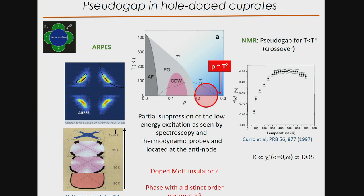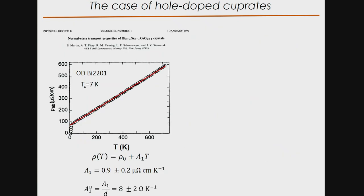I'm going to concentrate on the overdoped side of the phase diagram, particularly for the hole-doped cuprate — showing results above the critical point of the pseudogap phase. We know that for non-superconducting samples, resistivity is purely T-squared. One of the first hallmarks of T-linear resistivity in cuprates came from a 1990 paper where this group measured the resistivity of an overdoped Bi2201 sample with very low Tc. Up to 700 kelvin there is a beautiful T-linear resistivity, essentially down to Tc.